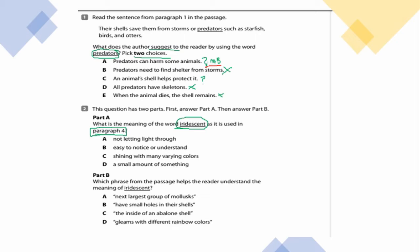Question number two has two parts — first answer part A, then part B. Part A: What is the meaning of the word iridescent as used in paragraph four? Is it A, not letting light through; B, easy to notice or understand; C, shining with many varying colors; or D, a small amount of something? I hope you've selected your best answer choice as it relates to how the word iridescent is used in paragraph four.